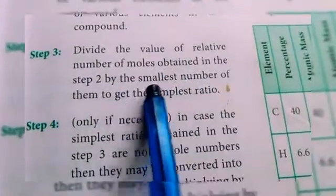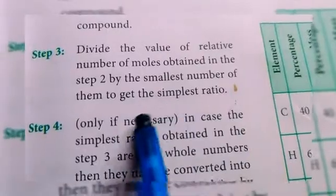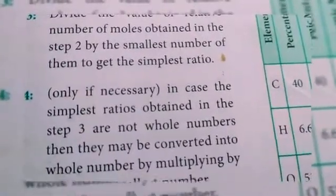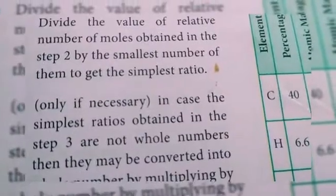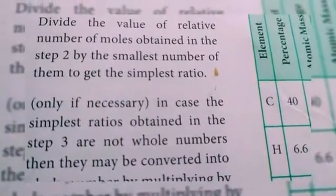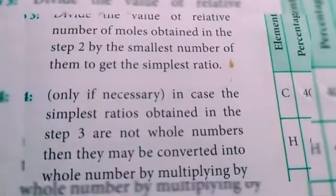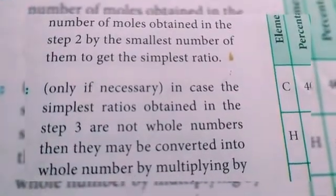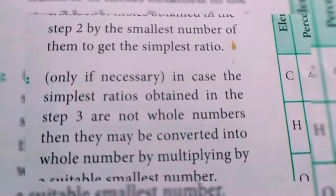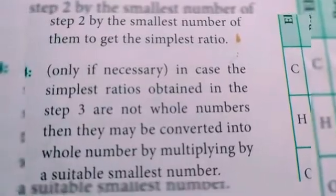Step 3: Divide the value of the number of moles obtained in step 2 by the smallest number among them to get the simplest ratio. If we have more than two or three or four atoms in the compound, we find each element's relative moles and divide all values by the smallest value to get the simplest whole-number ratio.